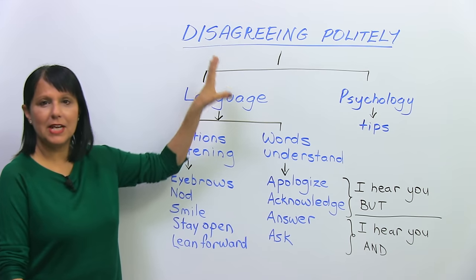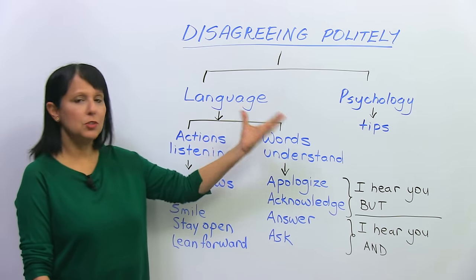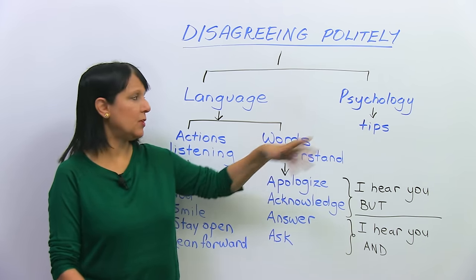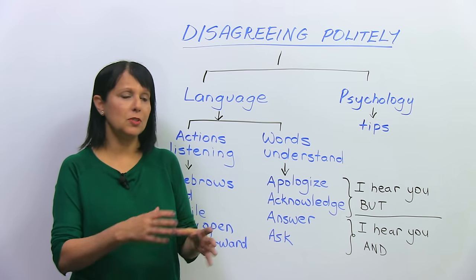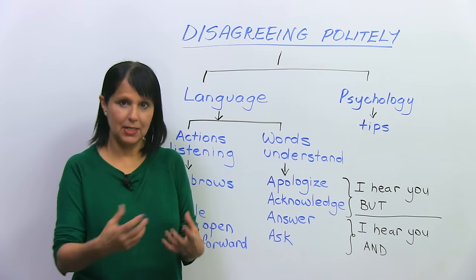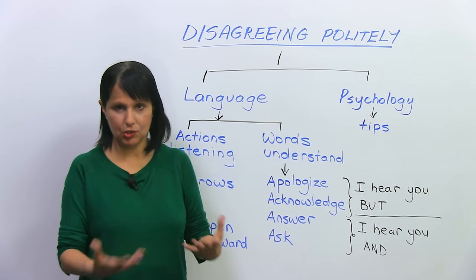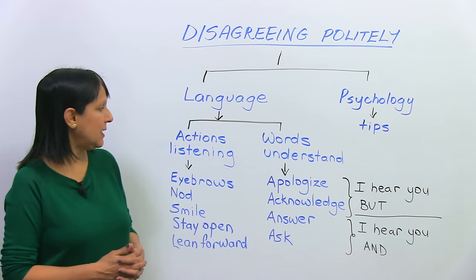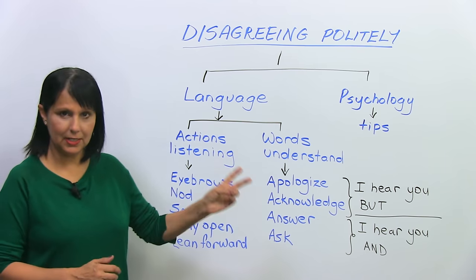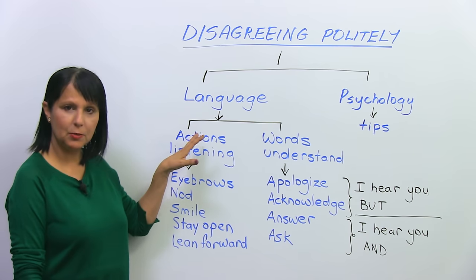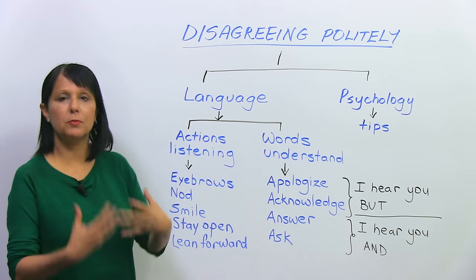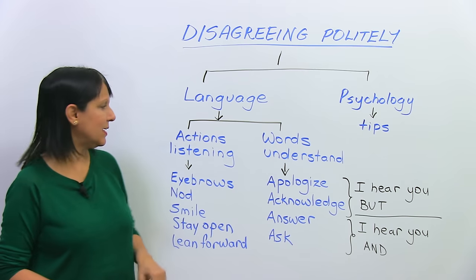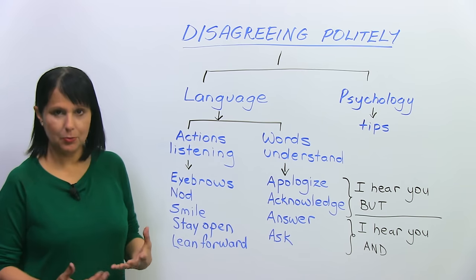We're going to analyze how to disagree politely from two different points of view. One is the psychology of it, where I'm going to give you some tips — that's also a good area to practice your listening comprehension. And the second is the actual language of disagreement, which we'll divide into two areas: body language and verbal language. I'll tell you what to do and what to say.